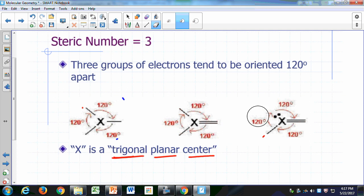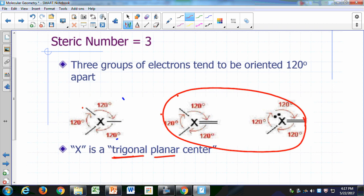Now these are actually, they're not going to, these two on the right are not going to be exactly 120 degree angles. It's going to be slightly distorted. And the reason for that is a double bond is a bulkier group.